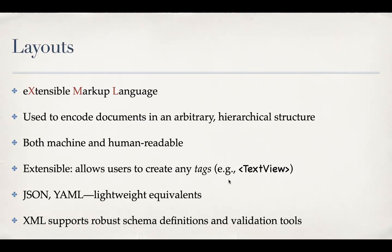Unlike HTML, where you are stuck with h1, h2, bold, and italic, here you can create your own tag and give it some meaning. There are lightweight equivalents of XML — particularly JSON is very popular over the web, and YAML is another format. There are several similar formats which can be translated back and forth from XML. But XML also has a robust schema definition and validation tools, and perhaps that's the reason why Google chose to go with XML.